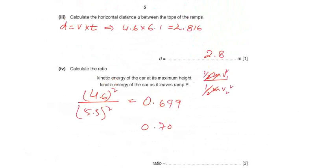So we know the velocity of the horizontal component, 4.6 times 0.61, we will get 2.806. So after two significant figures, it is 2.8.